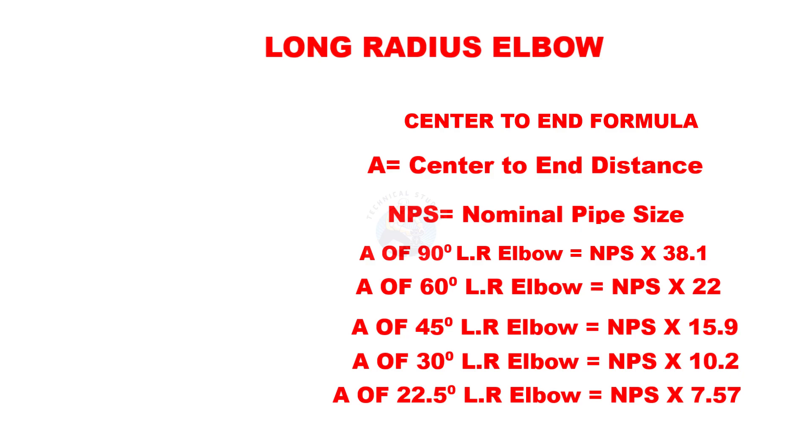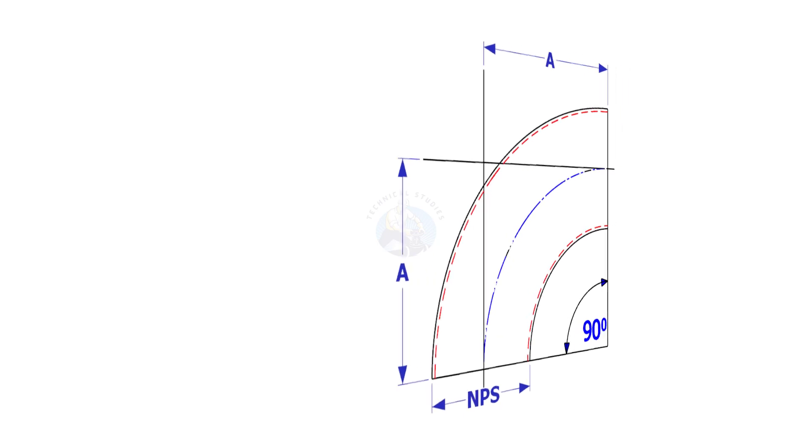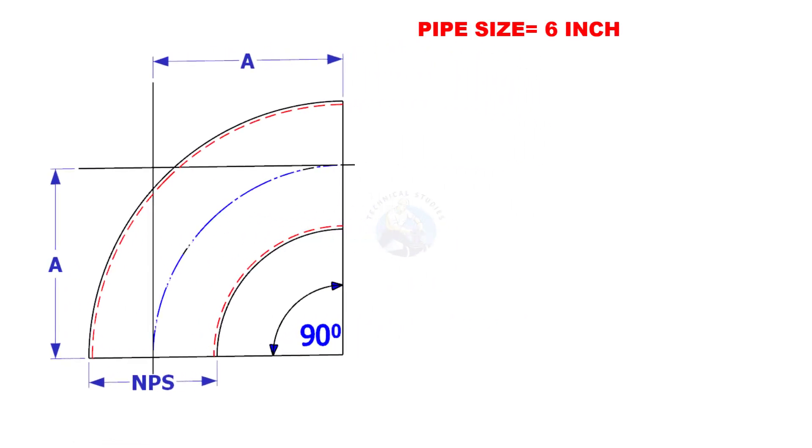Let us try some examples. Assume that the pipe size is 6 inches and the degree is 90. Multiply 6 by 38.1. The center to end distance of this elbow is 228.6 millimeters.